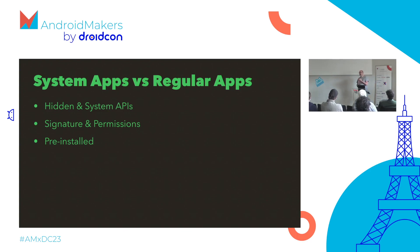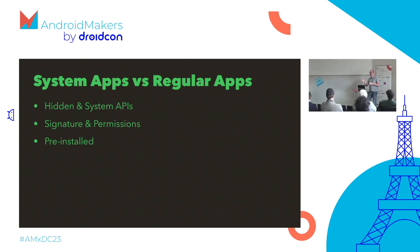A system app also has a specific signature and uses certain permissions. The signature of your app defines whether you're a system app, and being pre-installed can also make you one. There are two or three levels: system apps, privileged apps, OEM apps, and vendor apps — many different places on the device where these can be placed. They gain different privileges depending on where they're pre-installed. I'm going to focus on apps signed with the same certificate as the Android platform itself.